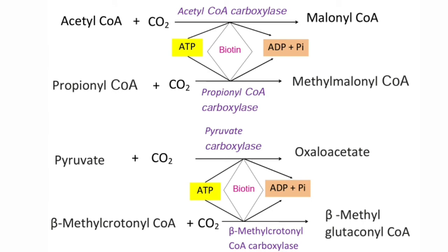The third reaction is the conversion of pyruvate to oxaloacetate. This conversion is also a biotin-dependent carboxylation reaction and is essential for the synthesis of glucose from many non-carbohydrate sources by a process called gluconeogenesis. The oxaloacetate formed is also required for the continuous operation of the citric acid cycle.